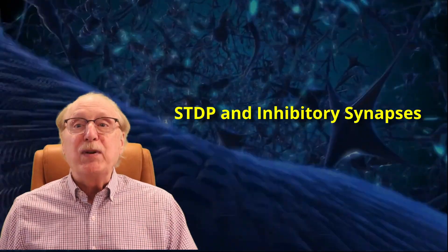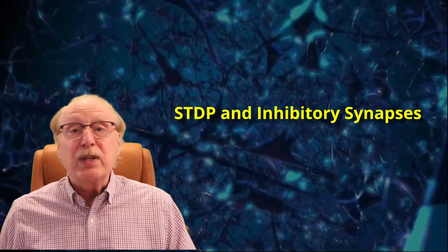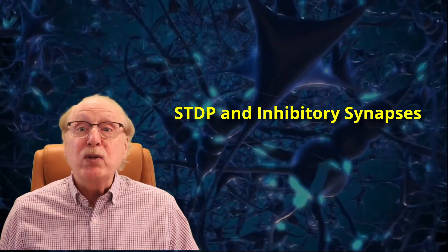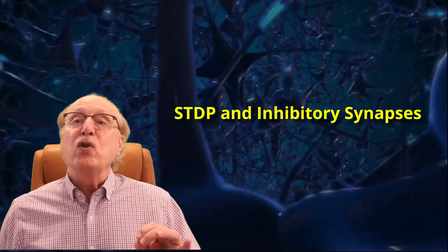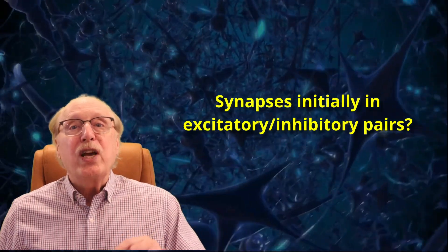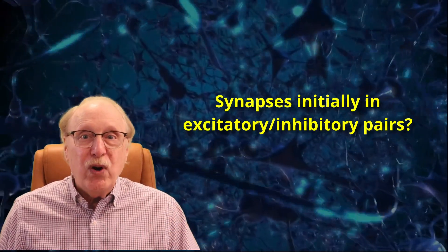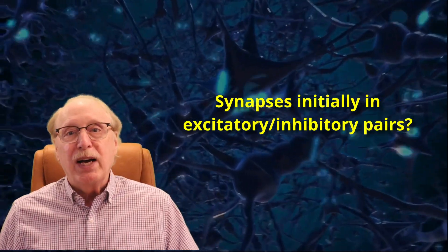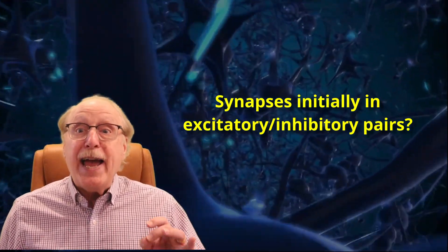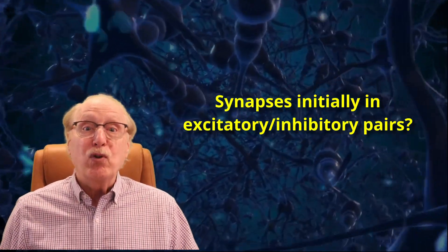STDP addresses inhibitory synapses separately. As I mentioned in the previous video, inhibitory synapses have a different chemistry, so there is no way for a biological synapse to adjust gracefully from a positive to a negative weight, the way our simulated ones can. In the instance I'm describing where you don't know in advance whether a synapse needs to be positive or negative, we must have both an excitatory and an inhibitory synapse more or less in parallel.